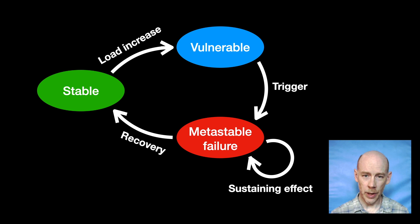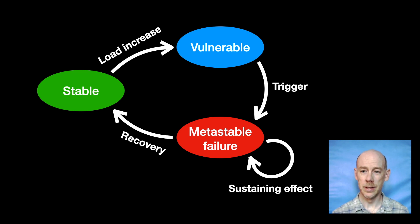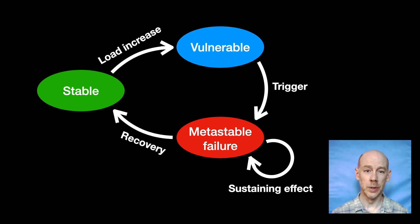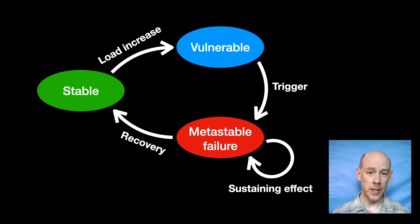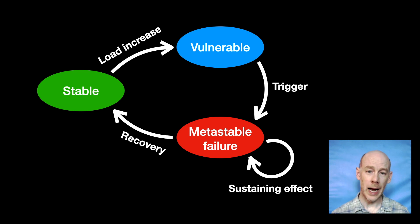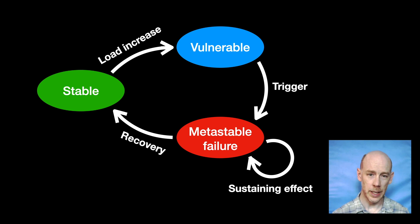Rather than just healthy and unhealthy, it's useful to think of the lifecycle of a metastable failure as having three states. In the stable state, a transient trigger results in errors, but the system self-heals as soon as the trigger is removed. As the load increases, we cross an invisible threshold into a vulnerable state. Nothing is visibly wrong at this point — no errors — but a transient trigger can kick-start a feedback loop that will trap us in a metastable failure. Even after the trigger is gone, recovery only happens when the load is reduced back across the threshold or when some intervention disrupts the sustaining effect.